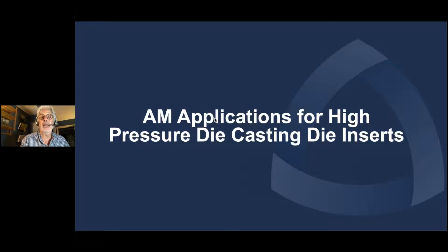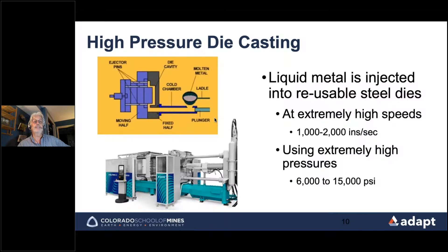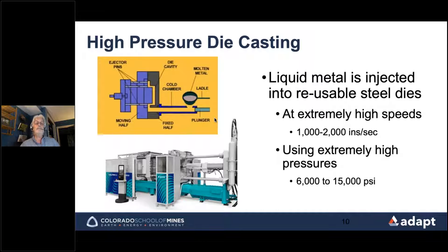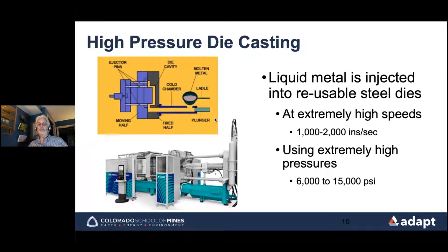Now let me talk about additive manufacturing applications for the high pressure die casting process, specifically die inserts. In high pressure die casting we use a hydraulically activated, electronically controlled plunger that injects liquid metal into reusable steel dies at extremely high speeds — somewhere between 1,000 to 2,000 inches per second gate speed, nearly half a football field per second — with cavity fill times from about 20 milliseconds for small parts to 200 milliseconds for a large part like an engine block.